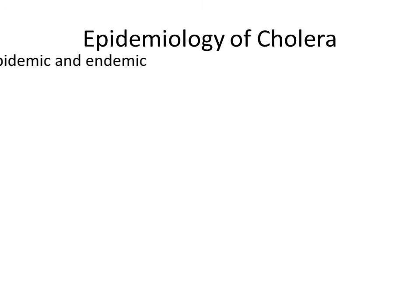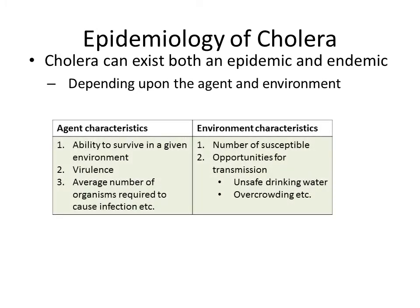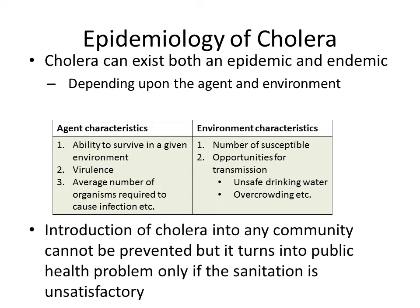Cholera can occur both as an epidemic or as endemic smouldering infection depending upon agent and environment factors. The agent characteristics include ability to survive in a given environment, virulence of the strain, and the average dose of organisms required to cause infection. The environmental characteristics which determine whether cholera will be epidemic or endemic include the number of susceptibles, and opportunities for transmission such as unsafe drinking water and overcrowding. Introduction of cholera into any community is easy and cannot be prevented, but whether it turns into a public health problem depends on whether sanitation is satisfactory.